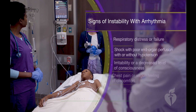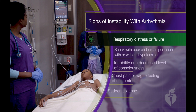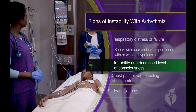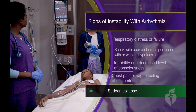The signs of instability in a patient with arrhythmia are: respiratory distress or failure; shock with poor end-organ perfusion, which may occur with or without hypotension; irritability or a decreased level of consciousness; chest pain or a vague feeling of discomfort in older children; and sudden collapse.